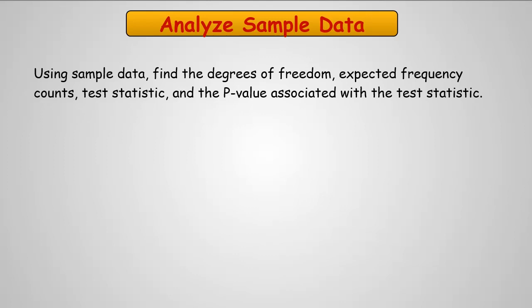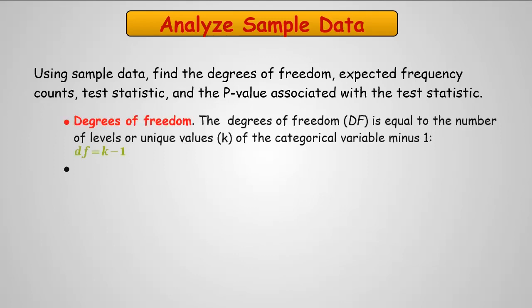For the analysis plan, we're going to use sample data, and we're going to find the degrees of freedom, the expected frequency counts, the test statistic, and the p-value associated with the test statistic. The degrees of freedom is going to be equal to the number of levels of unique values of the categorical variable minus 1.